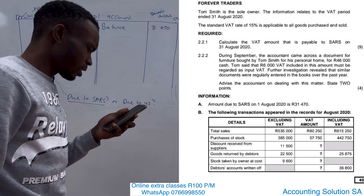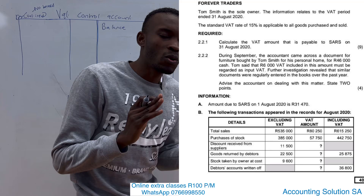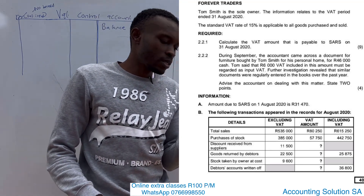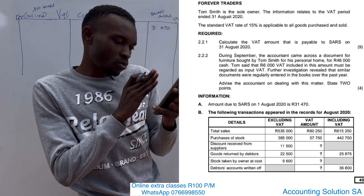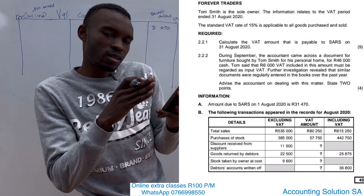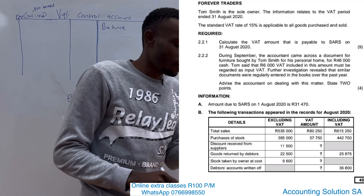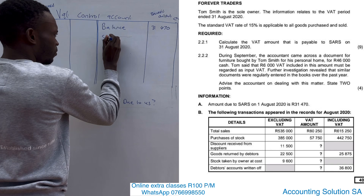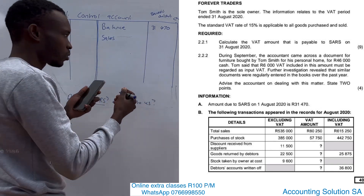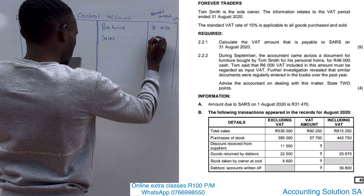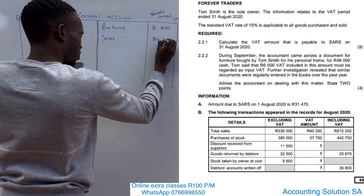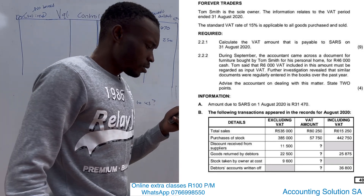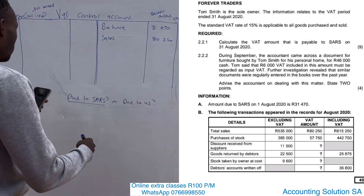Now let's check the transactions. Remember we only record the VAT amount, which means you must focus on the VAT column. They said total sales — obviously there is a benefit because we sold goods and we benefited by receiving cash from the customer. The VAT amount is 2,250, which goes on the credit side as output.